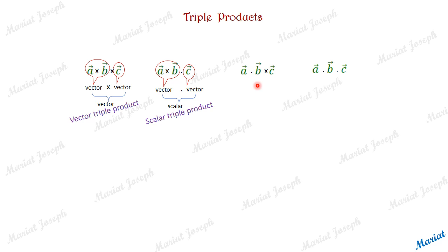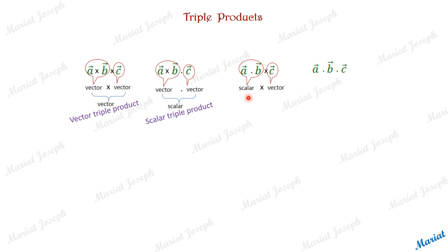Next possibility: if we do A dot B first, that becomes a scalar. Now we have scalar cross a vector — this has no meaning. Cross product is only possible between two vectors. We can do scalar multiplication, like three times C or five times C, but that is not called a cross product. So A dot B cross C, taken in this order, is meaningless — it is not defined.